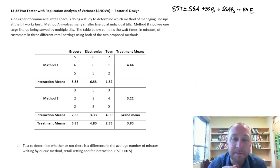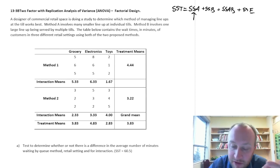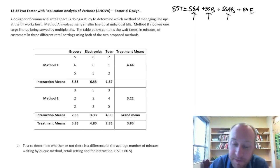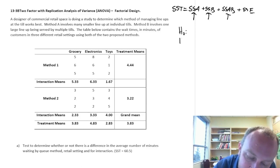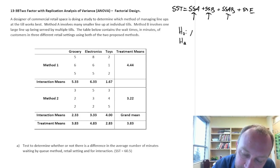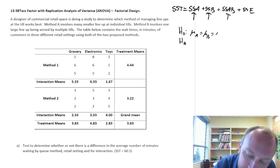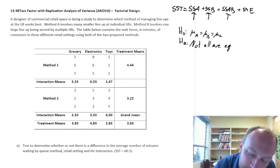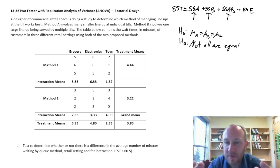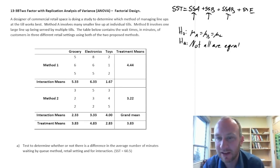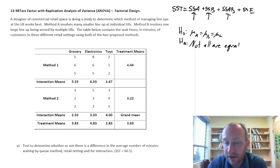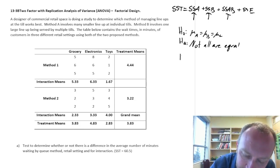When looking at a factorial design, we actually have three sets of hypotheses, because we're testing for differences across treatments in one factor, treatments across a second factor, and differences due to interaction. The first hypothesis is mu A equals mu B equals mu C, with the alternative that not all are equal. We're limiting ourselves to three means as that's the minimum that makes this analysis relevant.